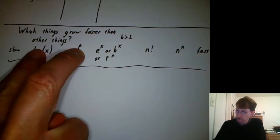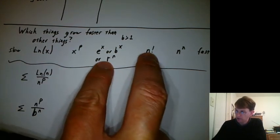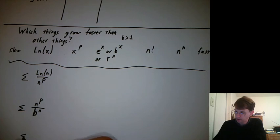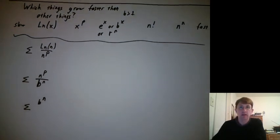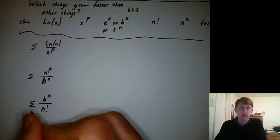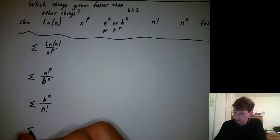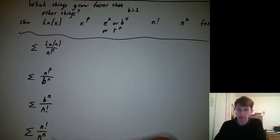So we've said, let's compare these two by that, compare these two by that. And now we'll compare those two by saying the sum of b to the n over n factorial. Does that sum converge? And then compare the last two here with the sum of n factorial over n to the n.